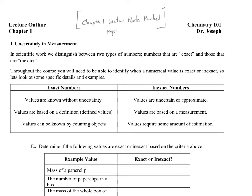Here in Chapter 1, we're going to start by talking about measurements and how we handle them. As I mentioned in the introductory video, chemistry is an experimental science — it's driven by experiments. And fundamentally, most experiments have to involve some form of measurement. That's why we're going to be talking about this first in our chemistry class.